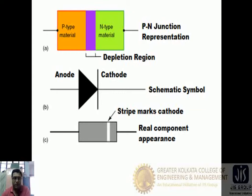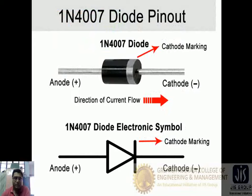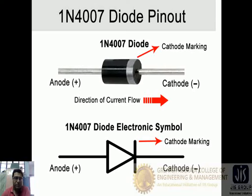There are two terminals — one is anode and another is cathode. The real diode available in the market has the number 1N4007. When we go to a shop to purchase a diode, we have to provide the part number to purchase that specific diode. In most laboratory experiments we use this 1N4007 diode very frequently. It is a two-terminal device.